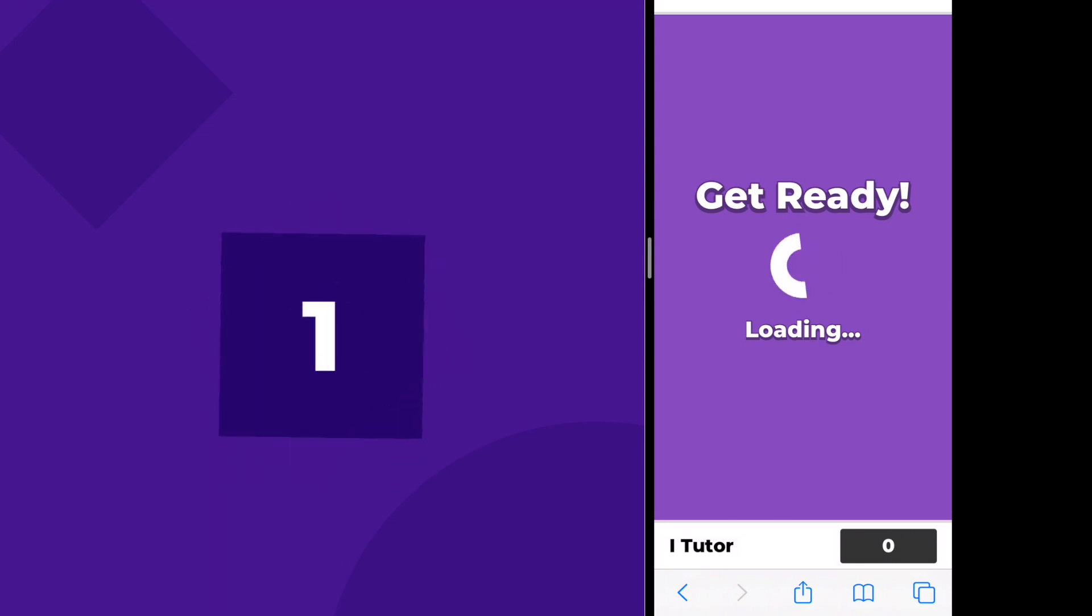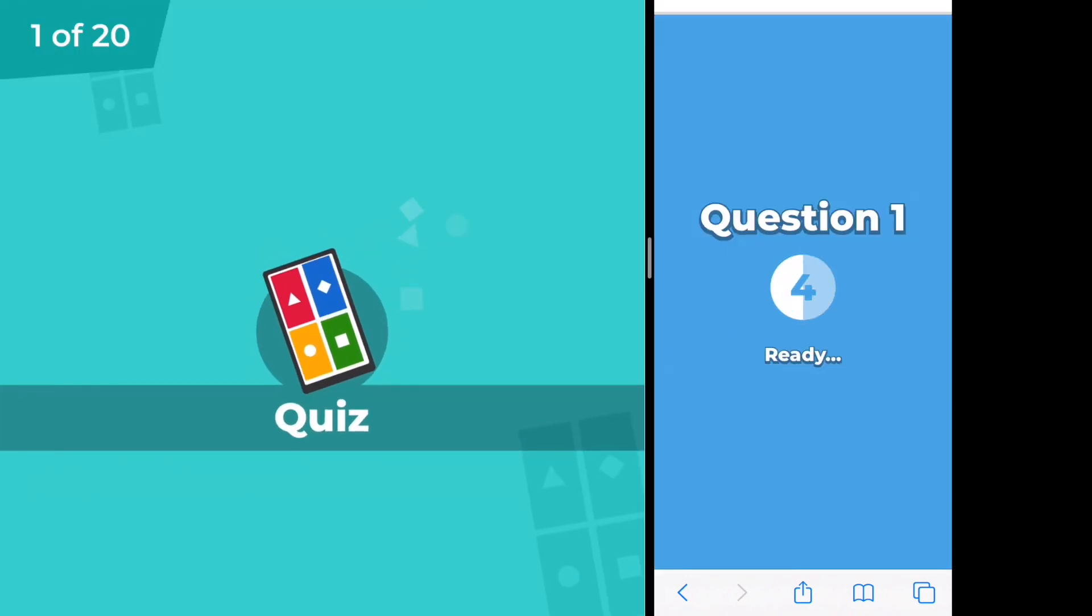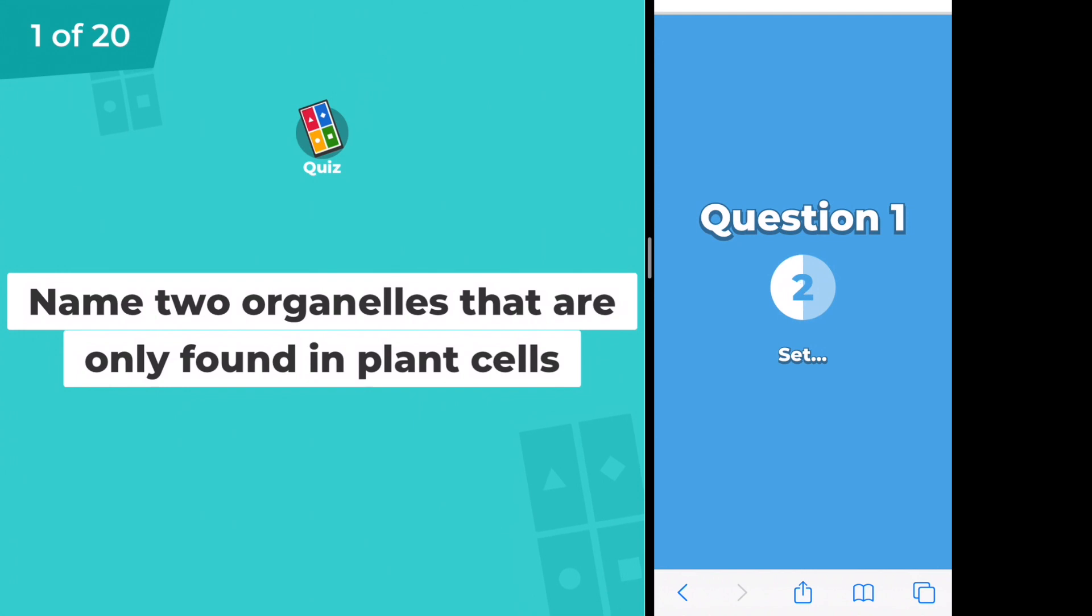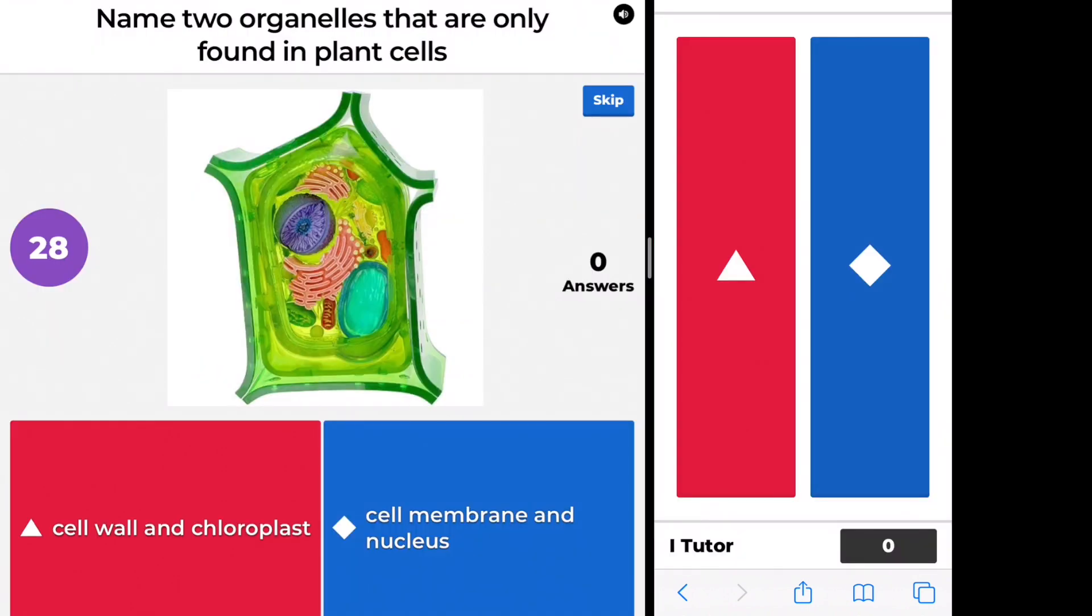During distance learning, the easiest way for students to see both the Kahoot! game board and their answer panel is by splitting their iPad screen.